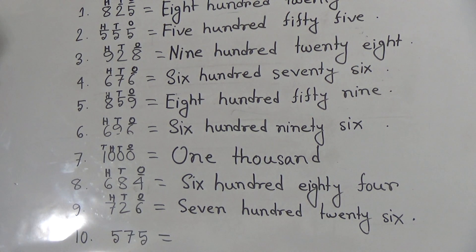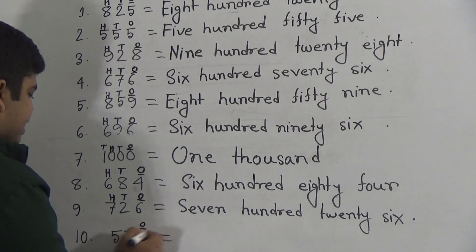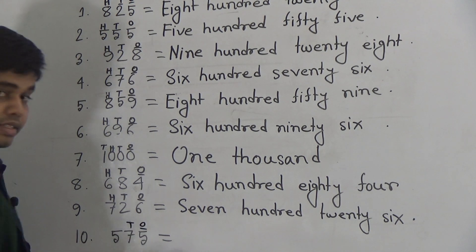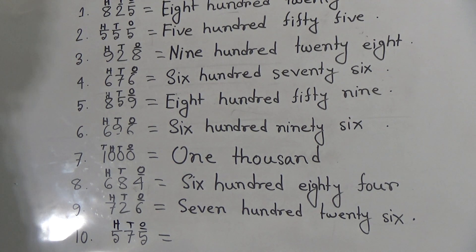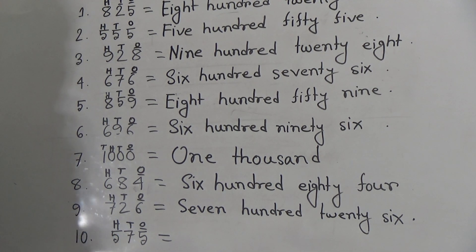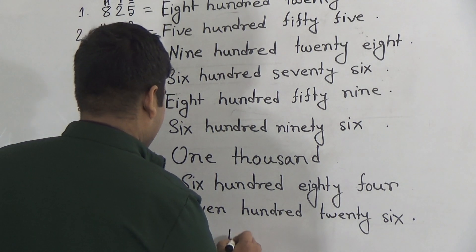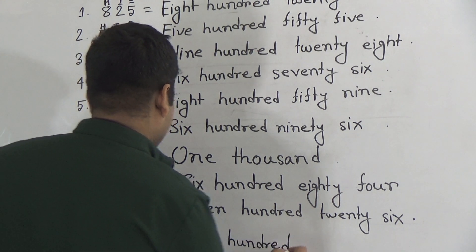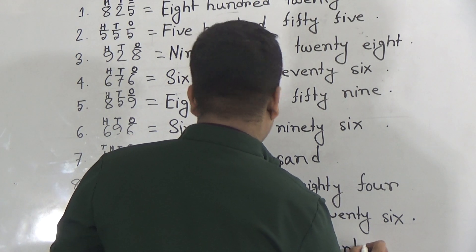And the last one: 575. Here 5 is in the 1's place, 7 is in the 10's place, and 5 is in the 100's place. Please say with me — what is this? 575. So write: 5 — F-I-V-E. Five hundred — S-U-N-D-R-E-D. Five hundred seventy five.